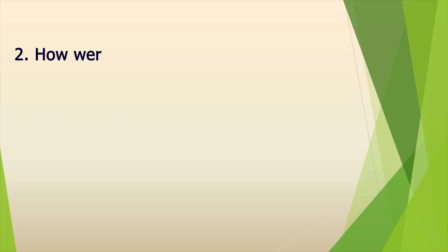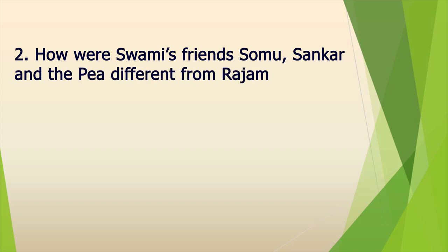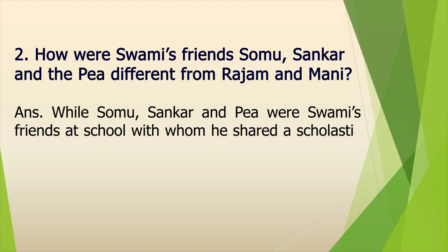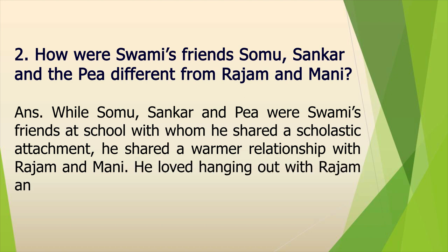Moving to Question 2: How were Swami's friends Somu, Shankar and the P different from Rajam and Mani? This question is based on understanding. The student must comprehend why the two sets of friends were different. The expected answer is: while Somu, Shankar and the P were Swami's friends at school with whom he shared a scholastic attachment, he shared a warmer relationship with Rajam and Mani — he loved hanging out with Rajam and Mani.